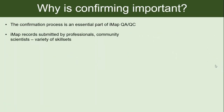So what is confirming and why is it important in iMapInvasives? The confirmation process is really important to the quality assurance and quality control of the iMap invasives database. One of the great things about iMap is that anyone can submit data — data comes in from professional partners, species experts, as well as community scientists and volunteers on the ground, so there's a real spectrum of skill sets. There's also a huge range in species — some are pretty easy to identify, some are super difficult and come down to very specific anatomical features, so it's really important to have a process where records are reviewed and verified.